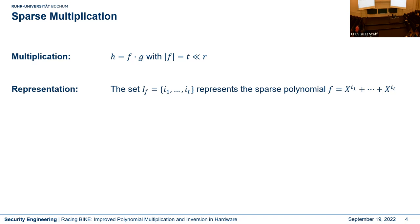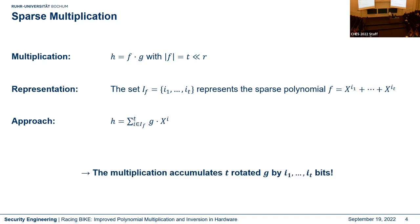We represent the sparse polynomial f by its indices, which are the non-zero bit positions, and the multiplication can be performed by shifting the general polynomial g — multiplying g by x to the power of i, where i are the indices of the sparse polynomial. At the end the multiplication accumulates t rotated copies of g, rotated by the indices of the sparse polynomial.